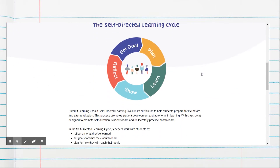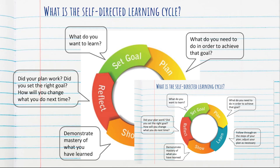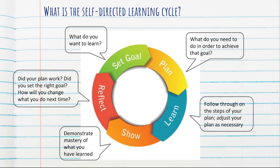On Summit's website they have a graphic that shows how the self-directed learning cycle is set up for students to use. Feel free to pause the video and set this up in your notes — draw out the cycle and the boxes coming out from it. Start out by reflecting on any prior learning you've done: did your plans in the past work, did you set the right goal, and how will you change what you do this time? Then continue the cycle by setting a goal — what do you want to learn? The next step is planning: what do you need to do to achieve this goal? After planning, you begin actually learning — follow through on the steps of your plan and adjust as necessary. Next, show or demonstrate your mastery over what you've learned, and cap off the cycle by reflecting: did your plan work, did you set the right goal, and how will you change what you do next time?